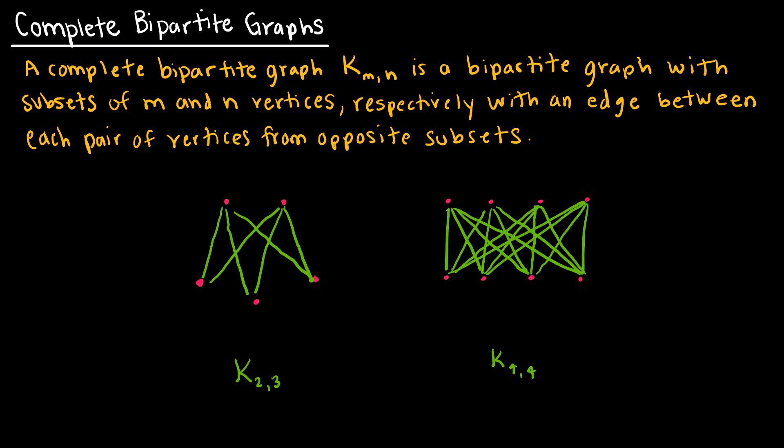The last special type of graph is a complete bipartite graph. We've talked about complete graphs and bipartite graphs. Now we're looking at a complete bipartite graph. Notice our notation: K is that same letter we used for a complete simple graph, but now instead of one subscript we have two, telling us how many vertices are in each of the two subsets.